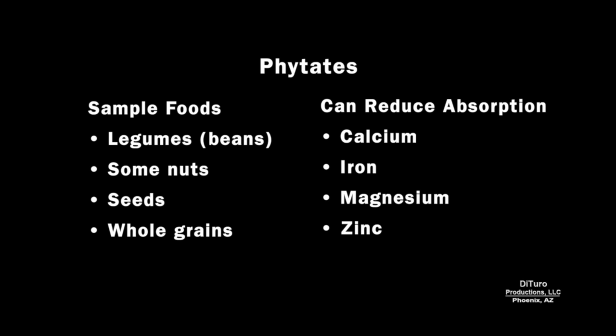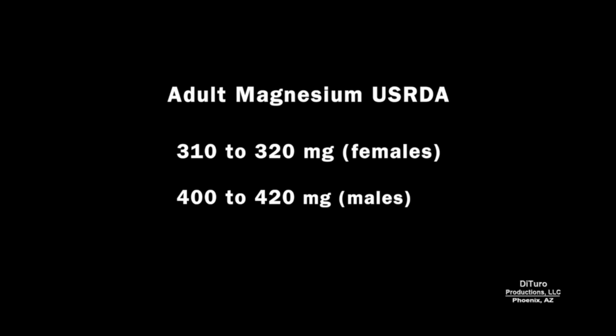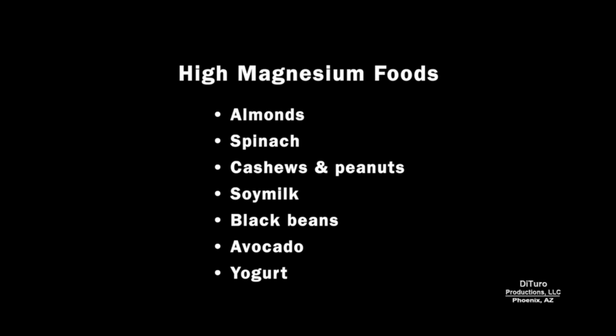The next anti-nutrient is phytates. Phytates can reduce the absorption of calcium, iron, magnesium, and zinc. They're found in beans, some nuts, seeds, and whole grains. The adult RDA for magnesium is about 300 mg for females and 400 mg for males. High magnesium foods include almonds, spinach, cashews and peanuts, soy milk, black beans, avocados, and yogurt.